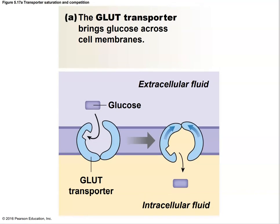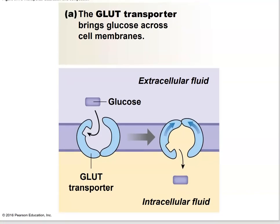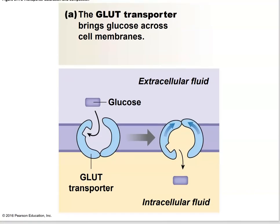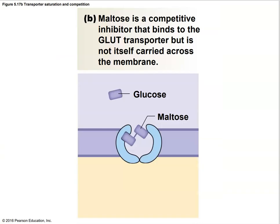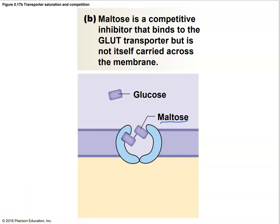Here's the glucose transporter another time — a uniport showing glucose loading in and then a conformational change of the transport protein letting it out on the other side. And here's an example of a competitive inhibitor: a maltose molecule blocks the binding site for glucose, blocking glucose from entering. That's considered an inhibitor to the glucose transporter.